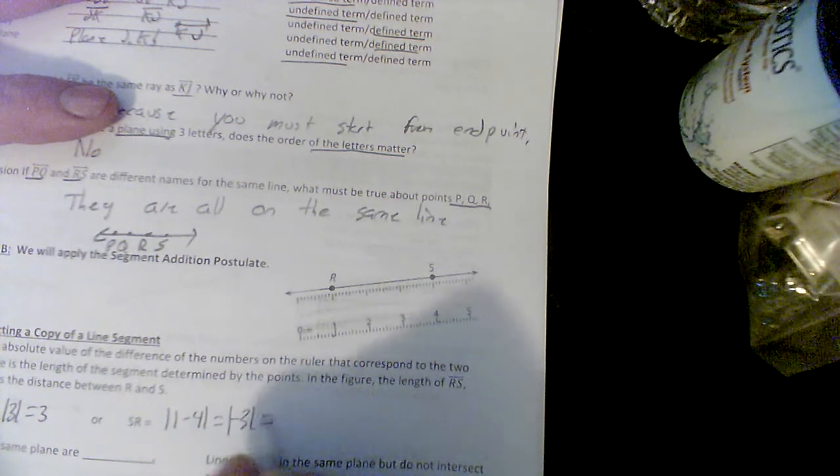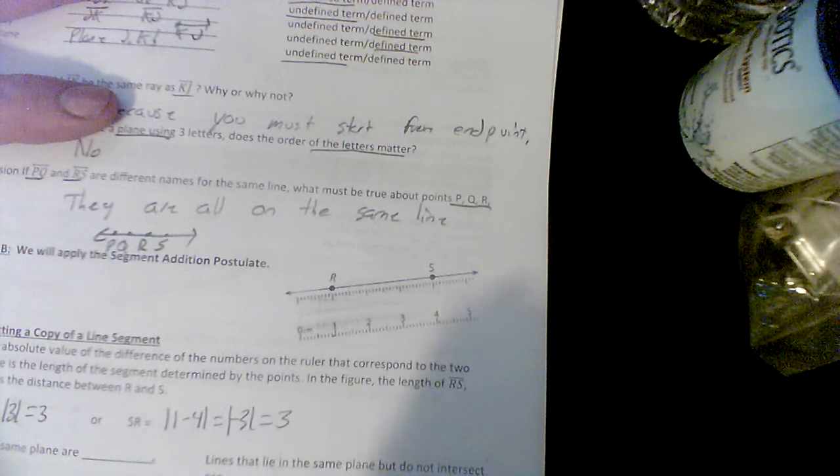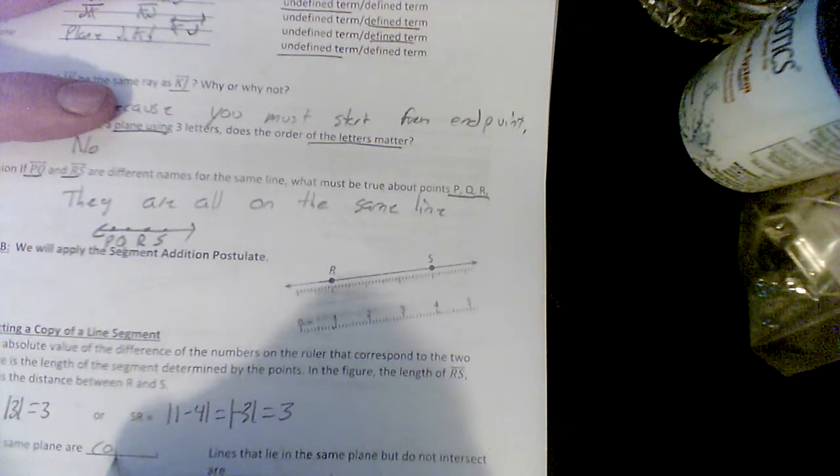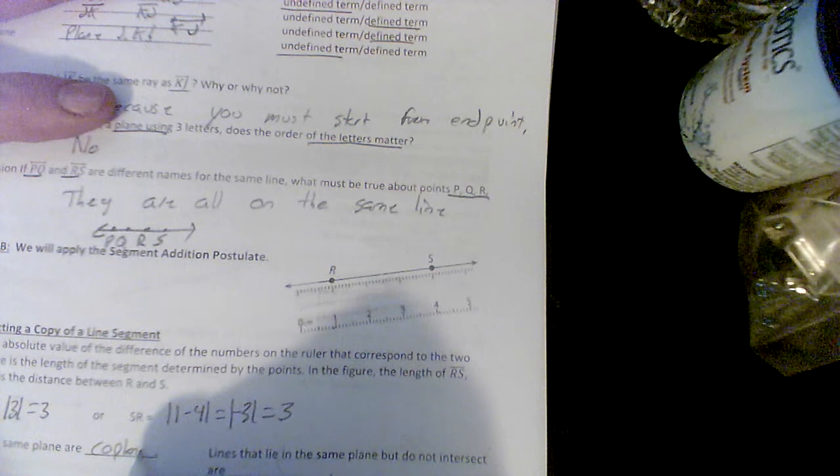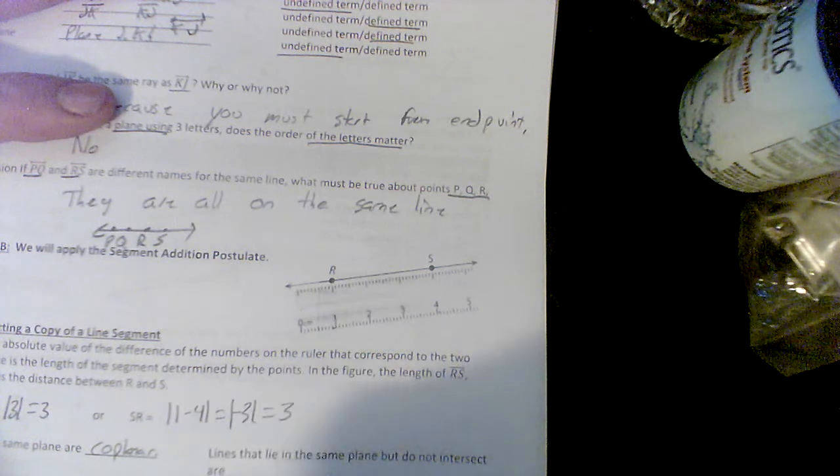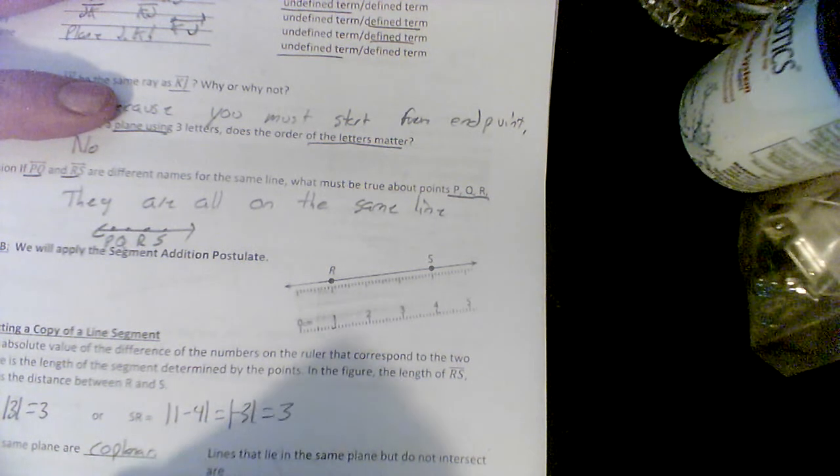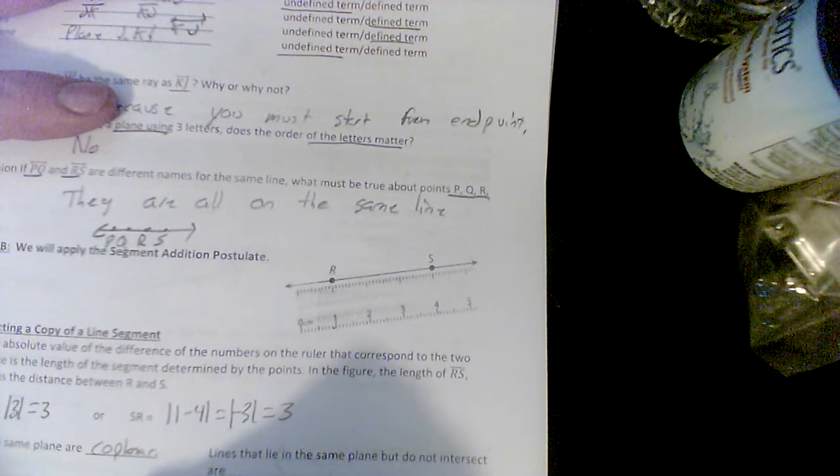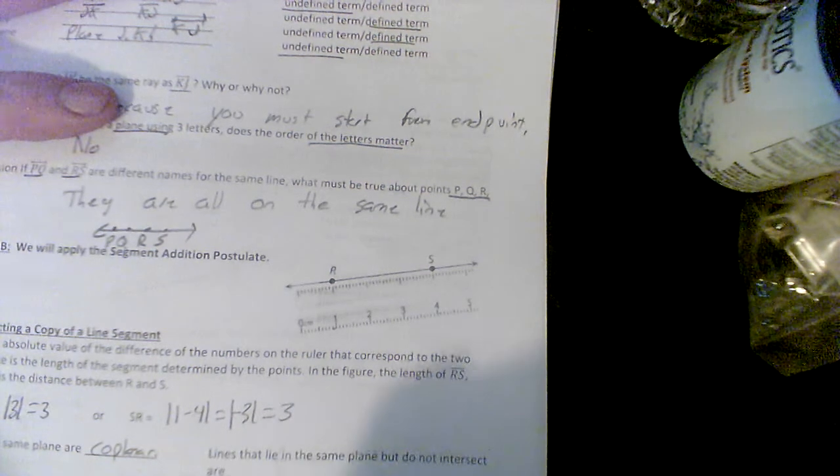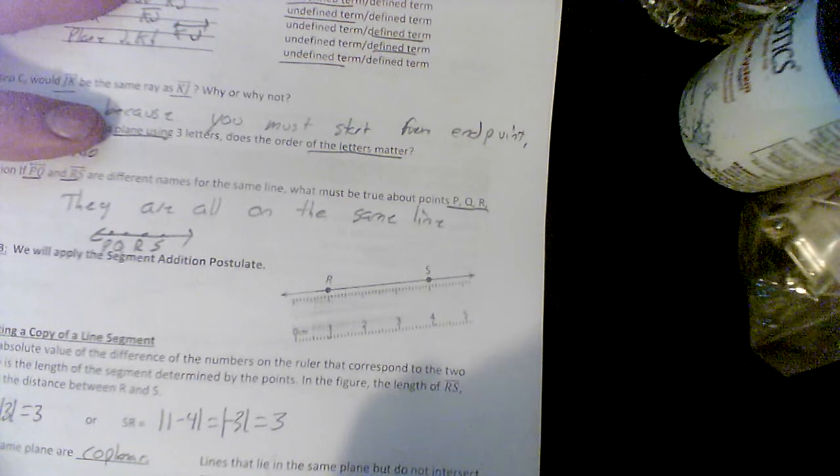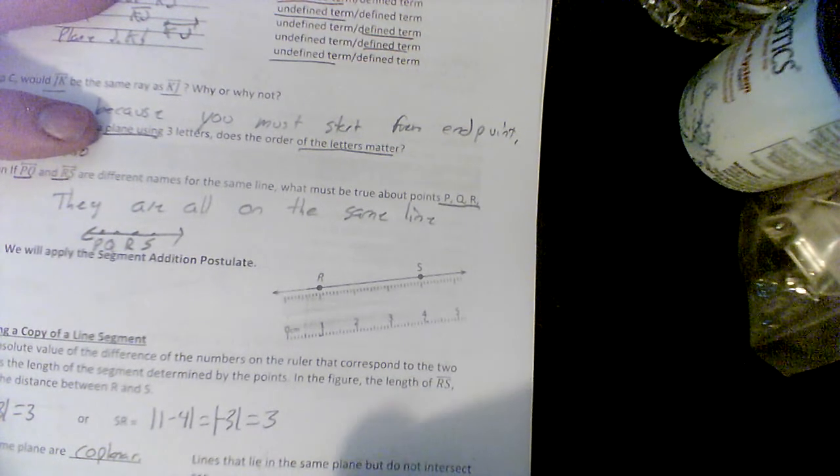Points that lie in the same plane are called coplanar. Points that lie in the same line are collinear. Cohabitate means you live together—most of you live with a couple people: mom, uncle, sister, brother.